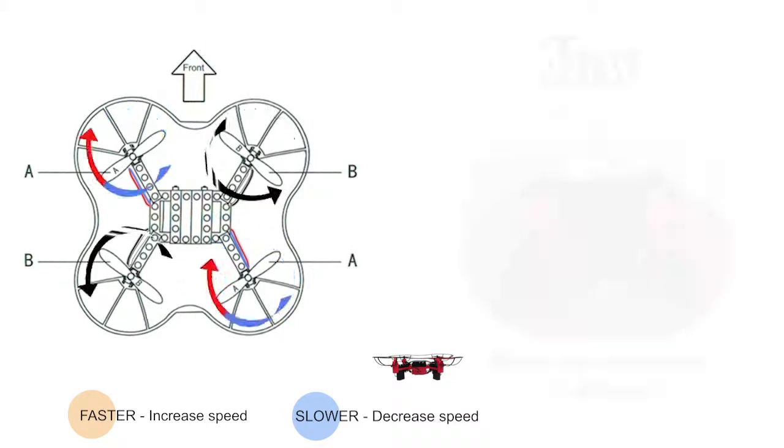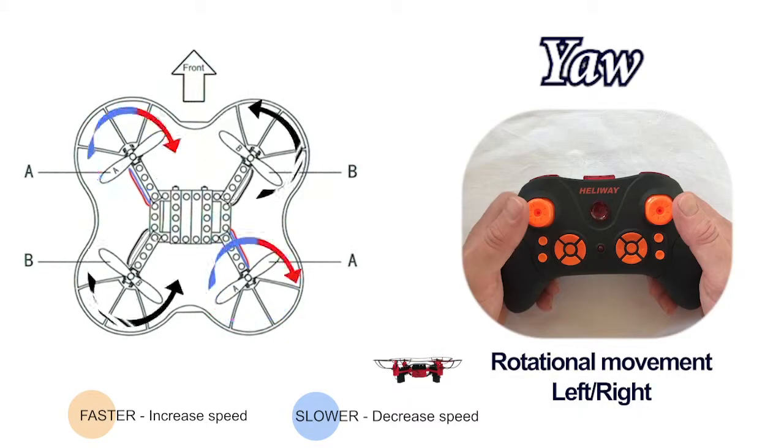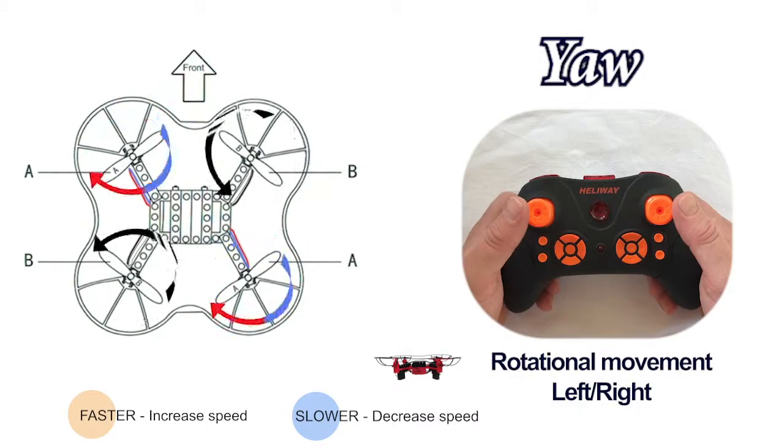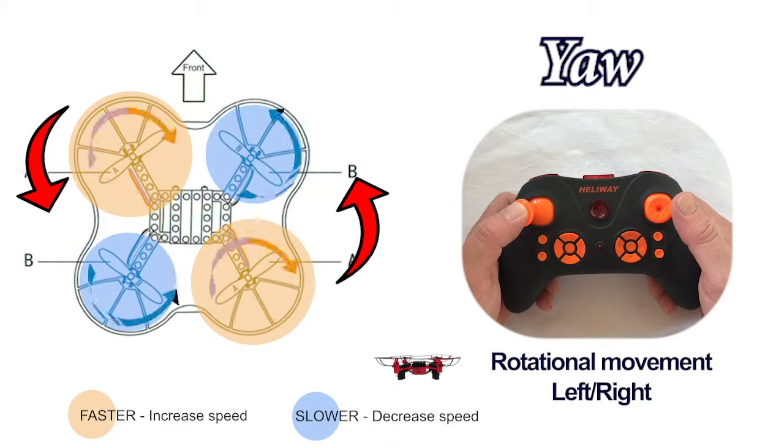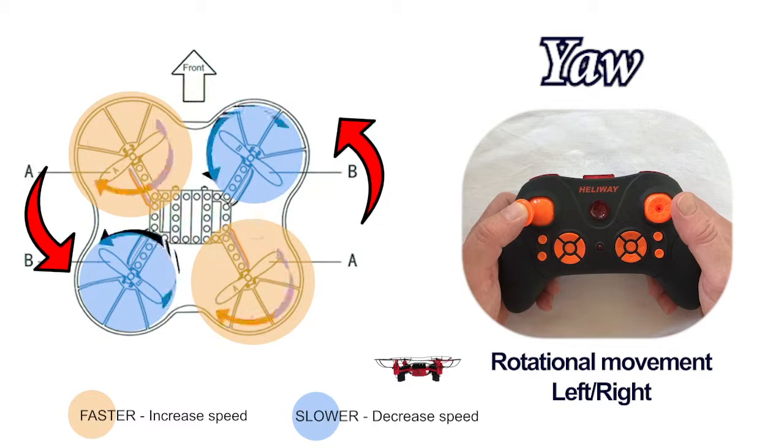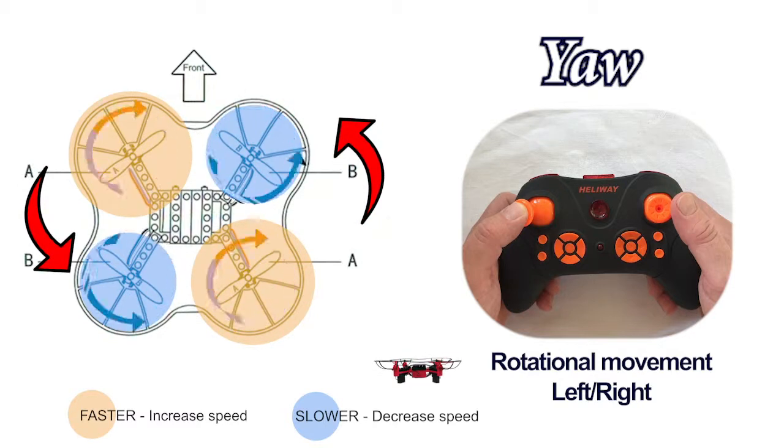The left stick on the controller is also responsible for yaw, and this is where we use motor torque to our advantage. So if we push the stick to the left, the A propellers spin faster with the torque making the drone yaw left or anti-clockwise.